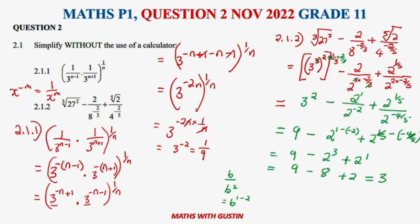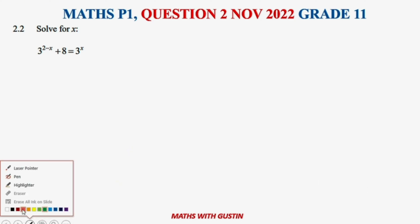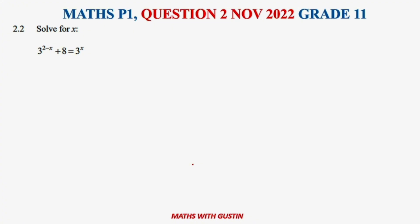I tried to be as slow as possible because I received a comment that I explain a bit fast, making it difficult to follow. I'll try to keep it straightforward while explaining as much as I can. Now let's move on to Question 2.2, which says solve for x. We are given 3 to the power of 2 minus x, plus 8, equals 3 to the power of x.